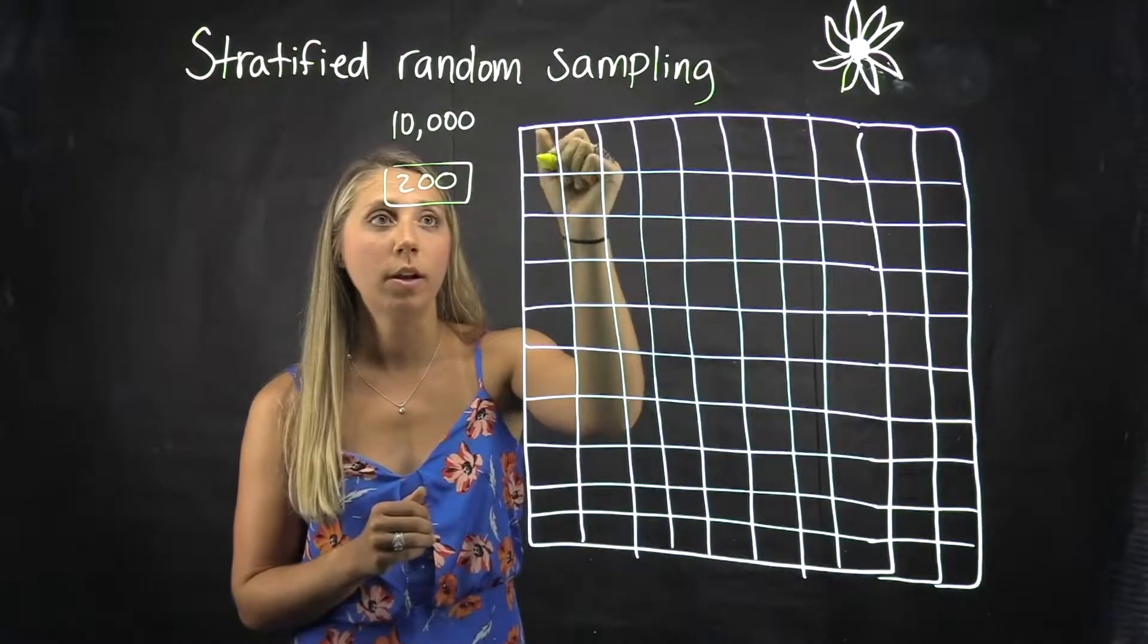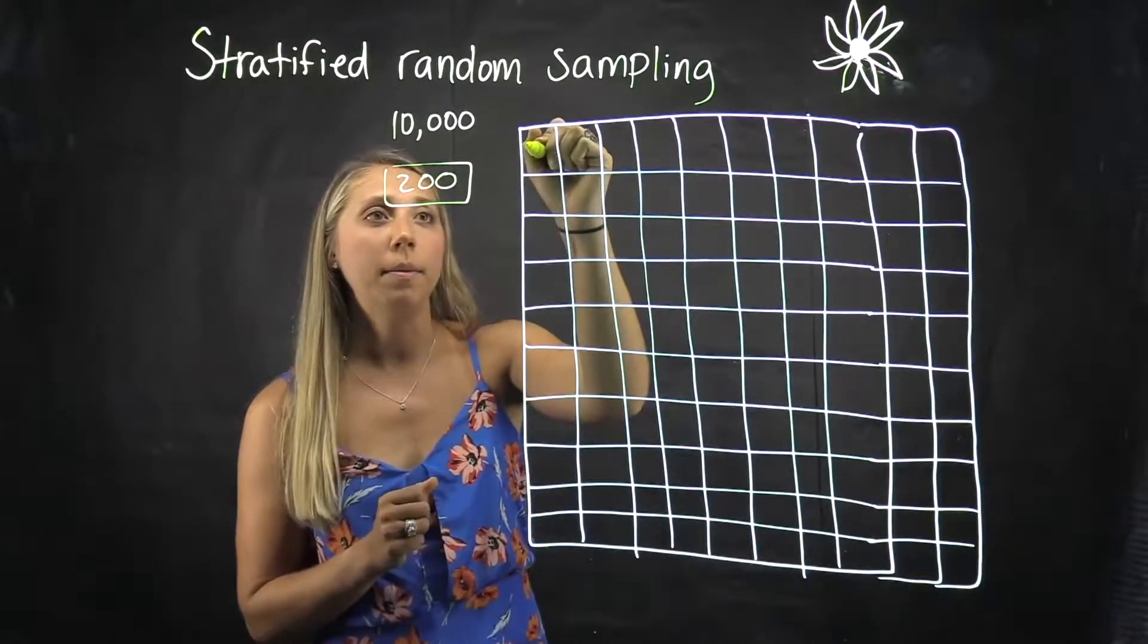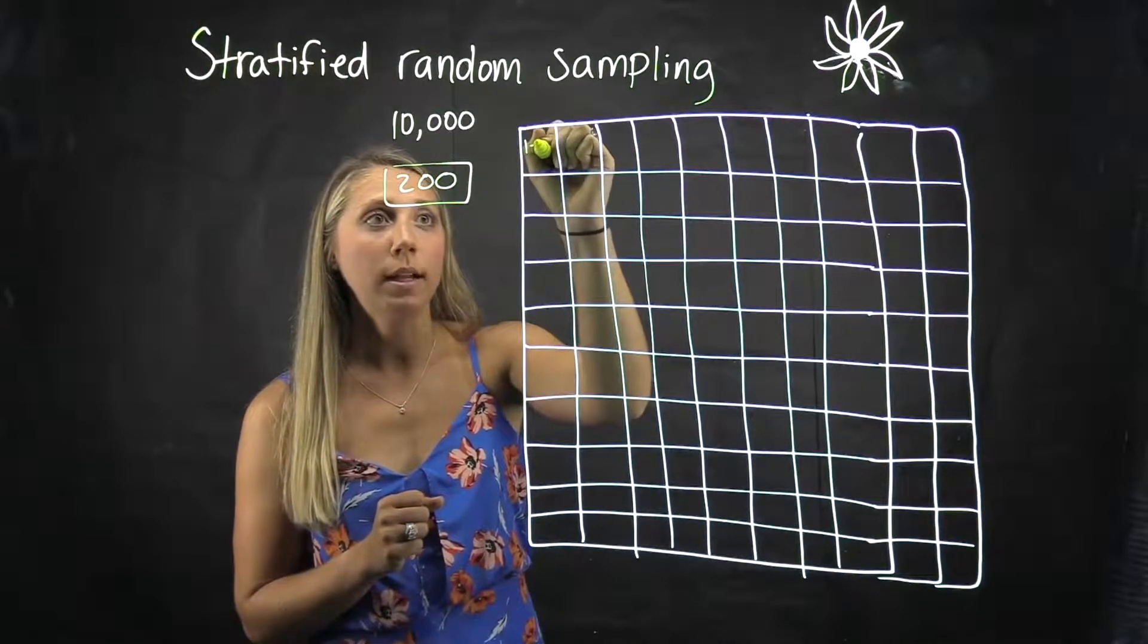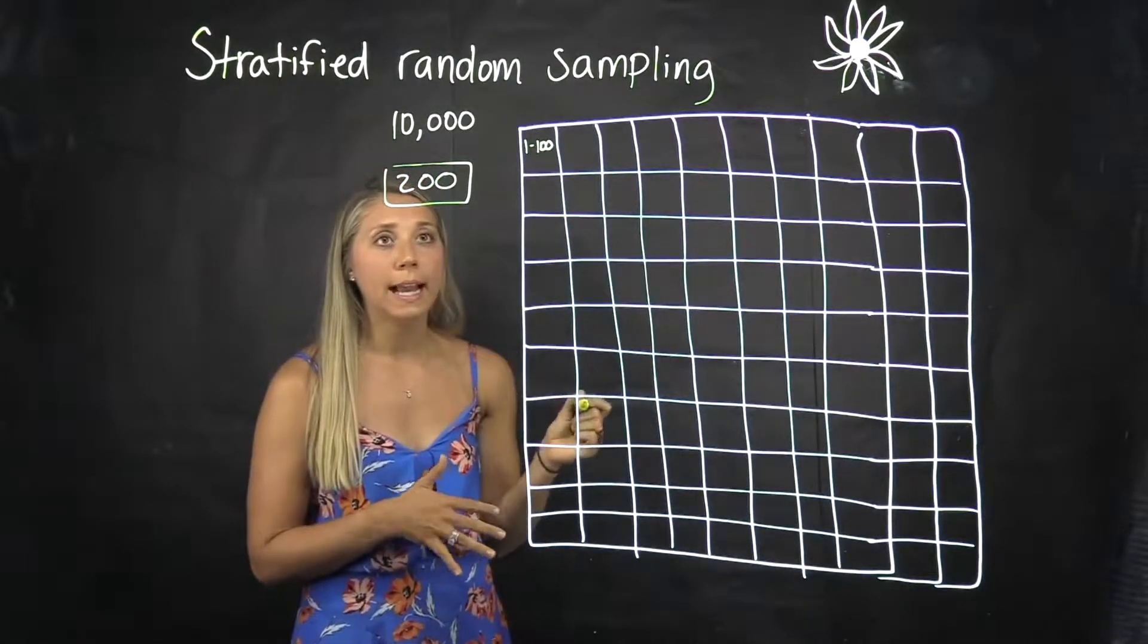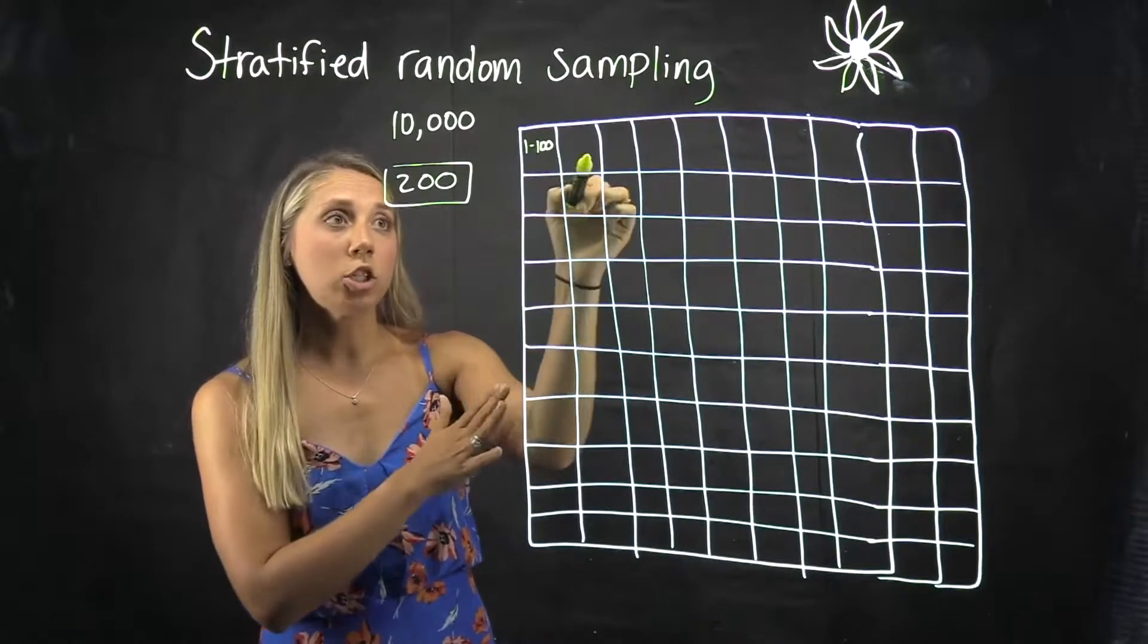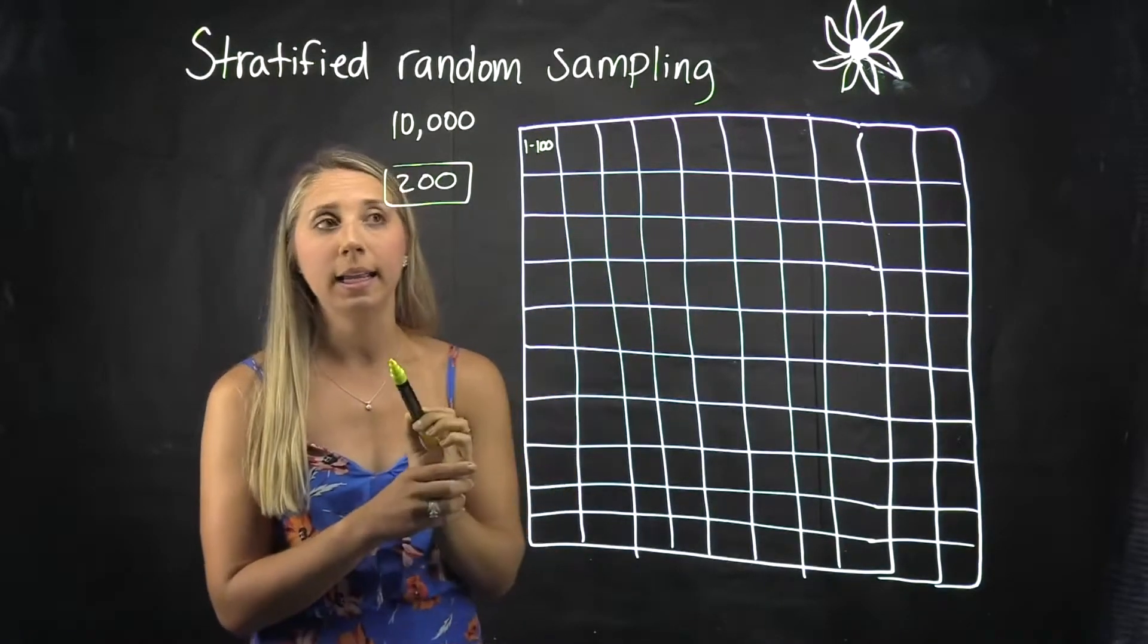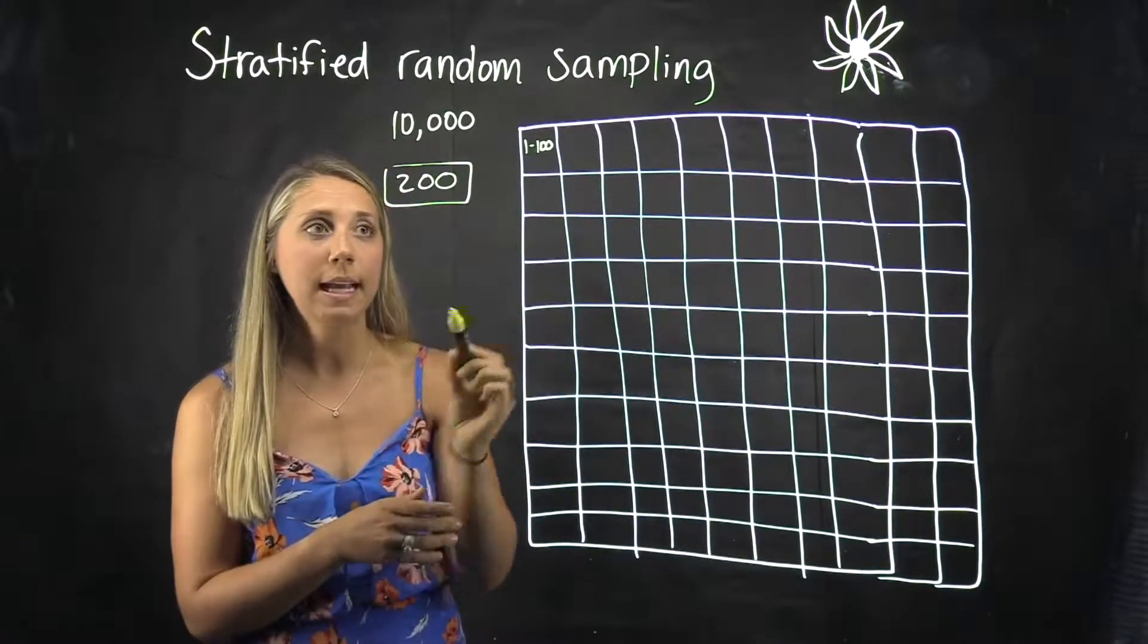Within each plot the sunflowers would be numbered 1 to 100, and from there we could take out randomly from each strata. So each plot here is considered a strata, we can take out two sunflowers and measure the heights of those.